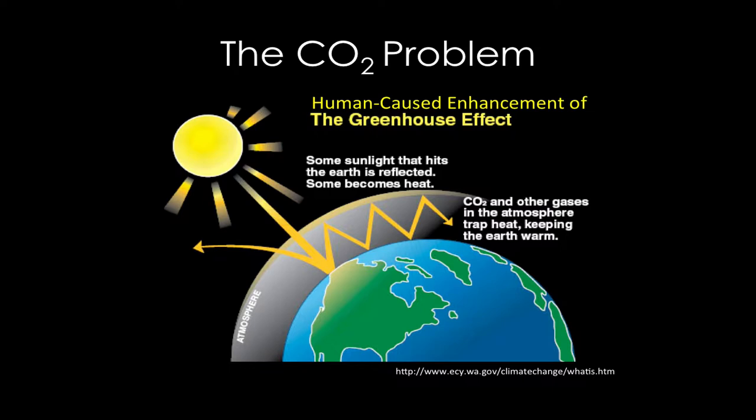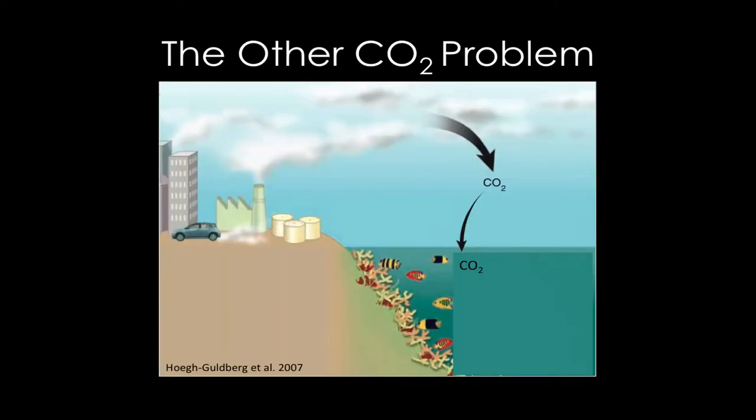Ocean acidification is sometimes called the other CO2 problem. About a quarter to a third of the CO2 emitted into the atmosphere diffuses into our ocean — a natural process where gas comes to equilibrium between the atmosphere and the ocean. But as humans put more CO2 into the atmosphere, more diffuses into the ocean. At first, people thought: great, less climate change. But the problem is that CO2 in the oceans isn't benign — it's actually causing some issues.